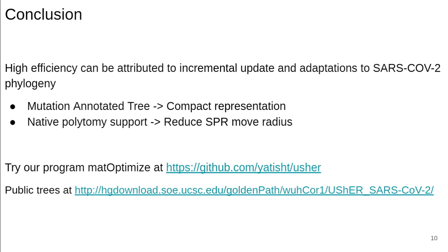The low memory and runtime requirement of matOptimize can be attributed to the incremental update method and specific adaptations to the SARS-CoV-2 phylogeny. We use the mutation annotated tree, which is a compact representation of closely related sequences. Our native support for polytomy allows us to find more profitable moves within a smaller radius, and also makes parallel evaluation of SPR moves viable, because changes to major alleles are less likely to propagate through polytomy.